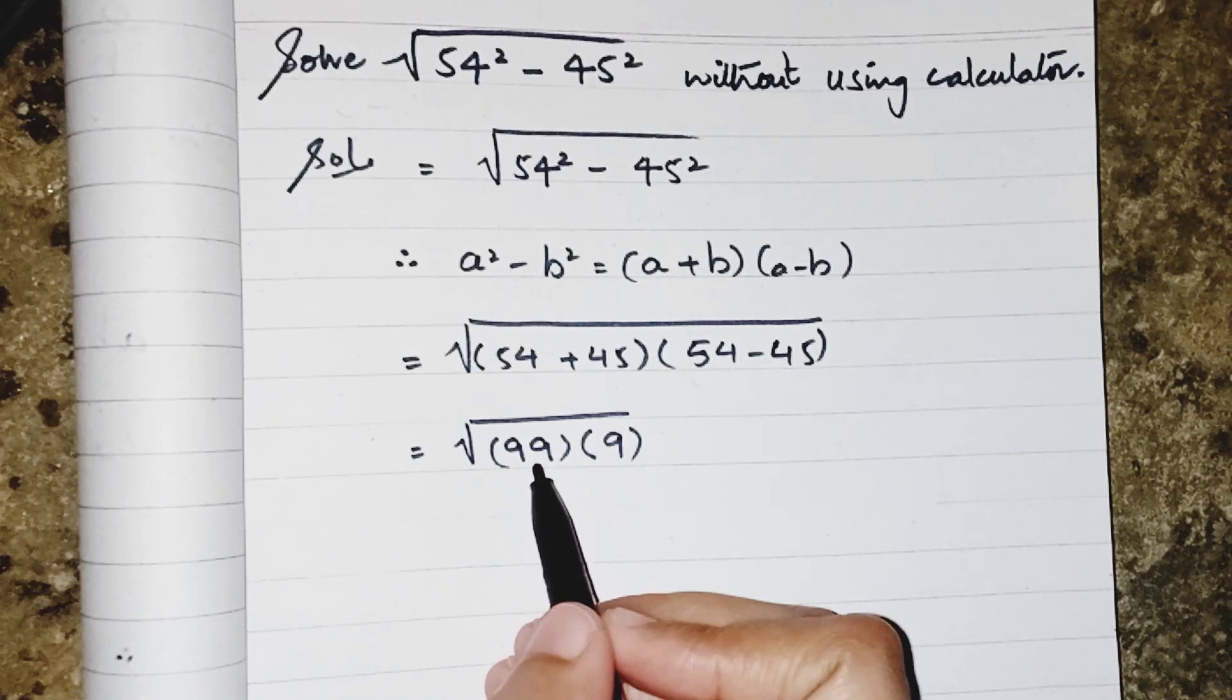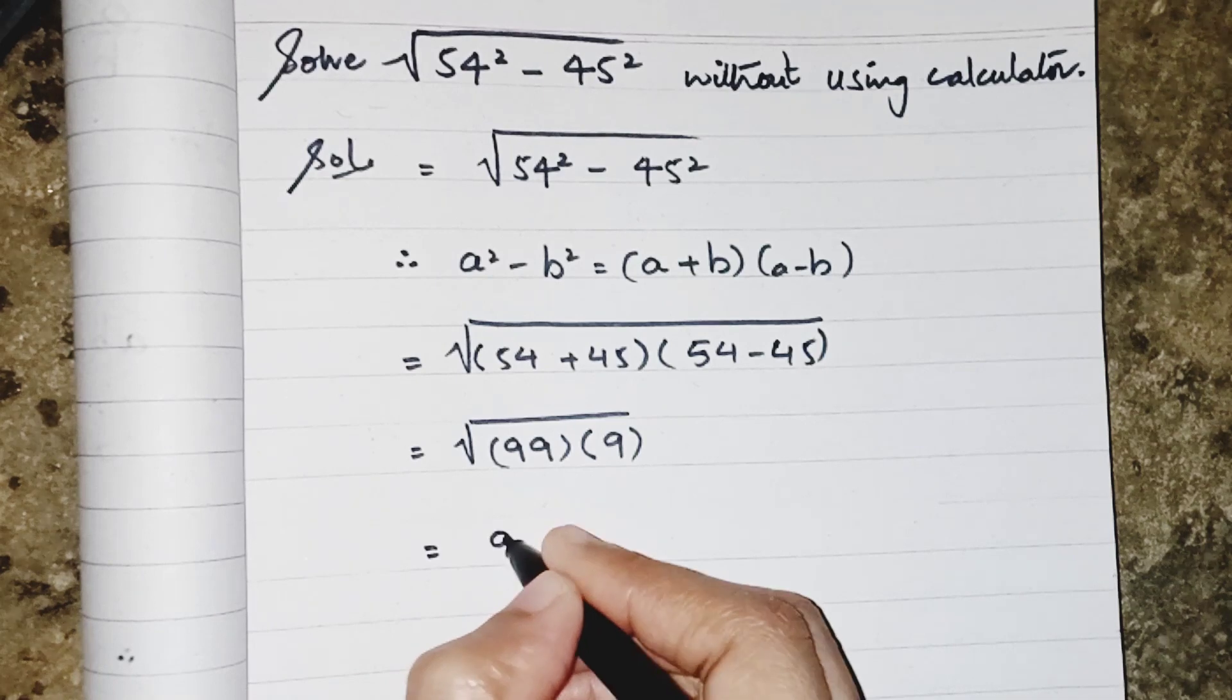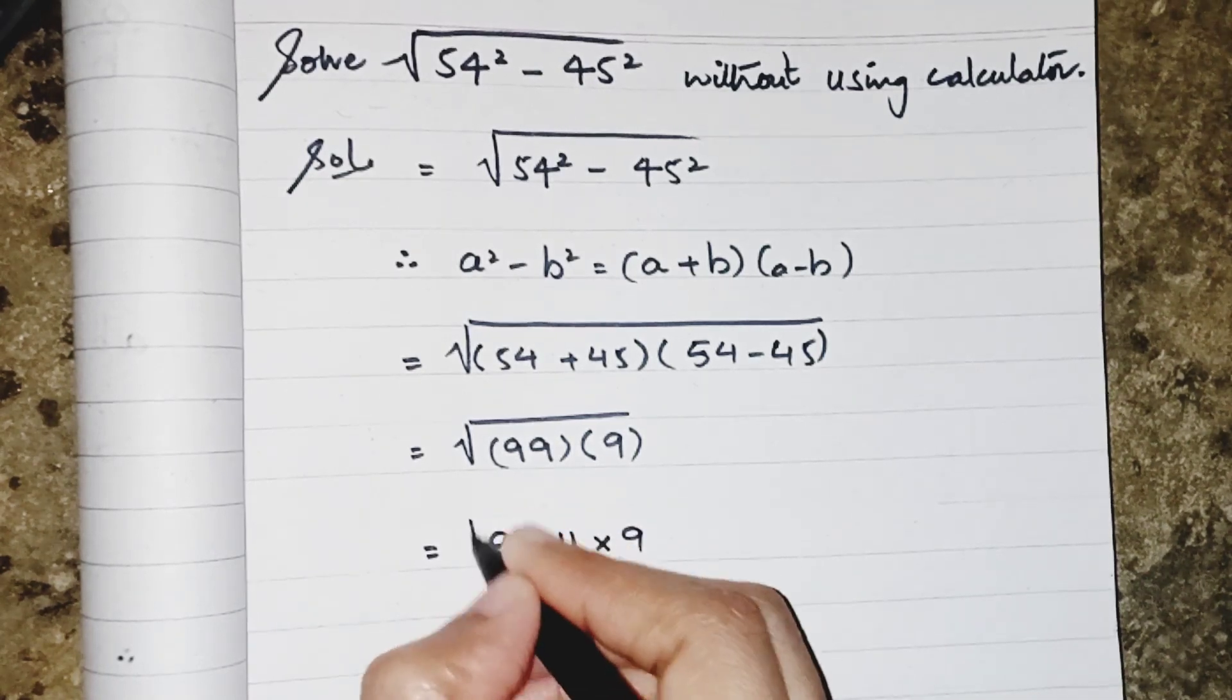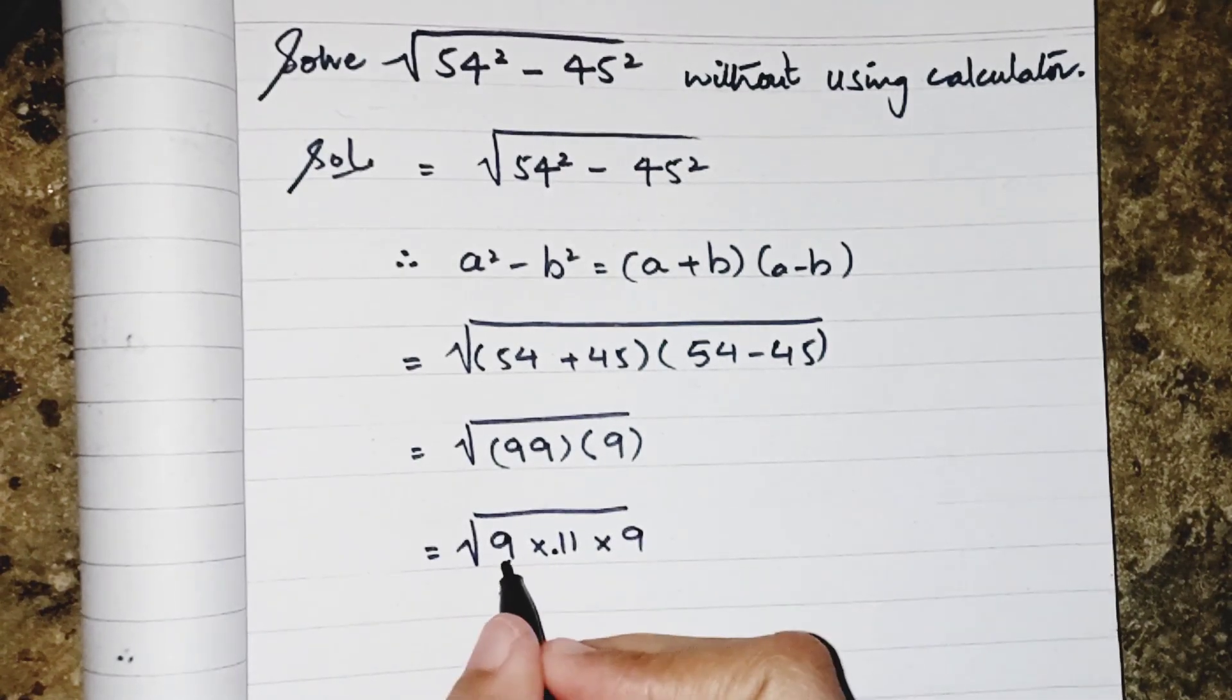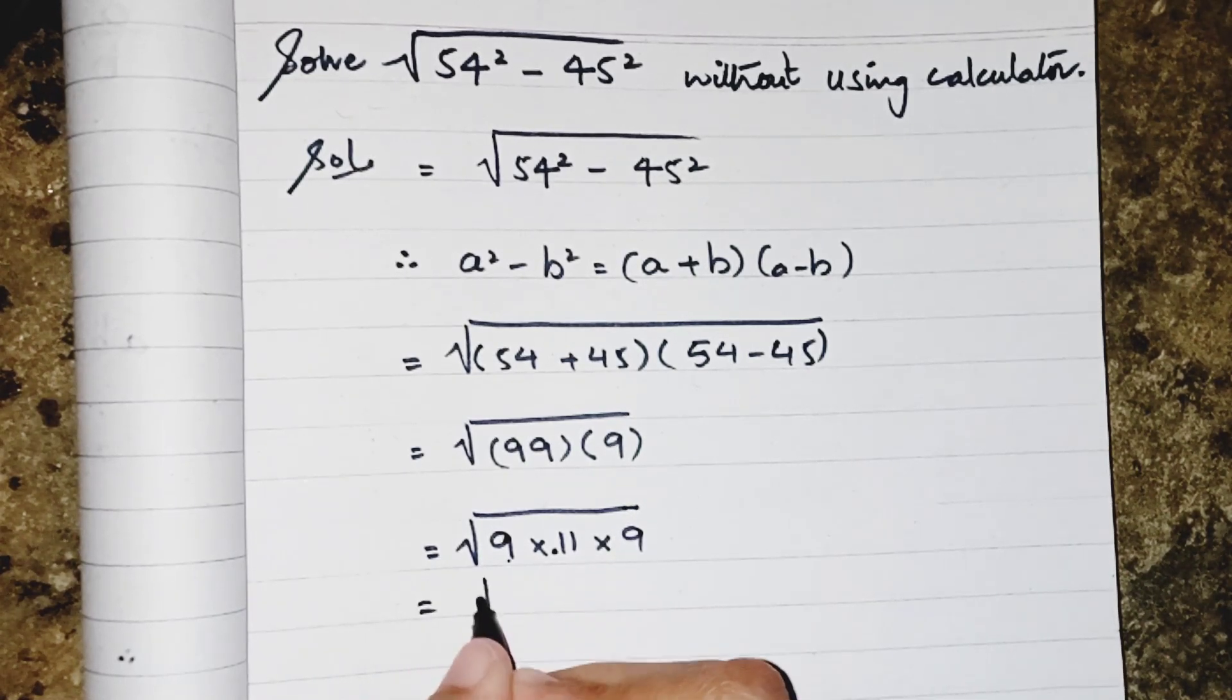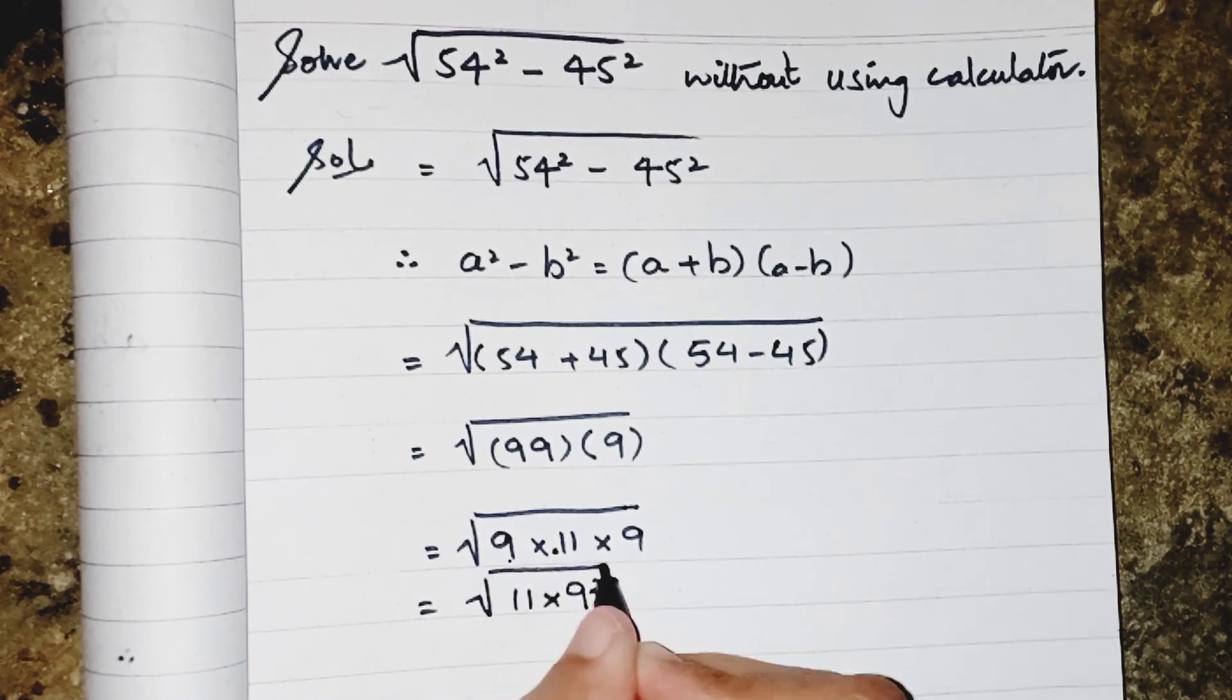So I can see that this 99 is a factor of 9 into 11 into 9. So in place of 99, I just write 9 multiply by 11, and this 9 will become... so 9 and 9 both are the same, so I can write as 11 multiply by 9 square.